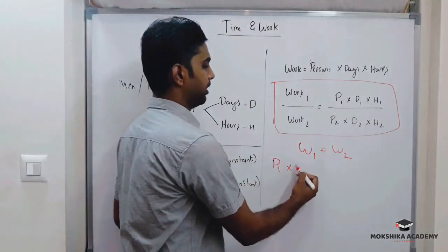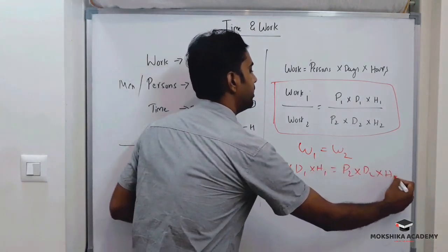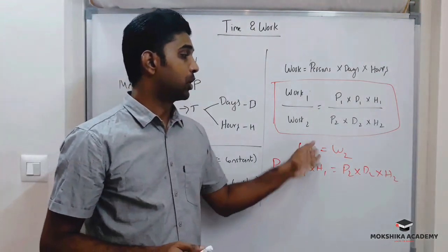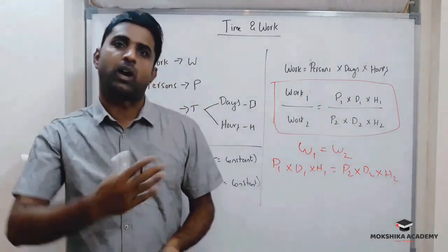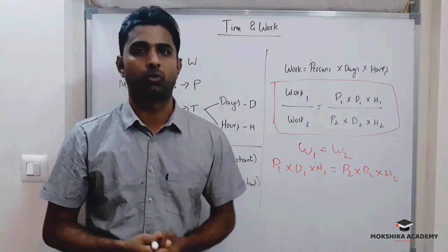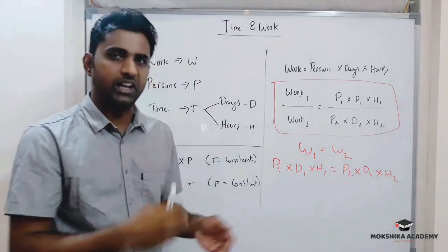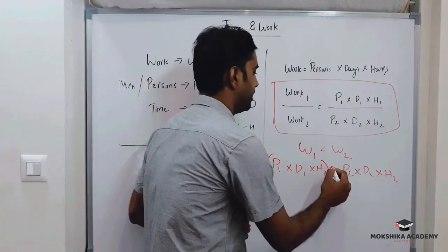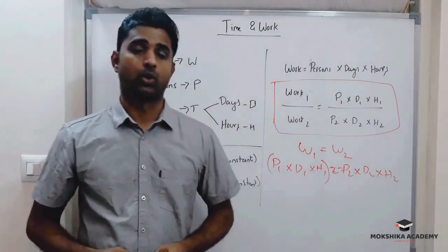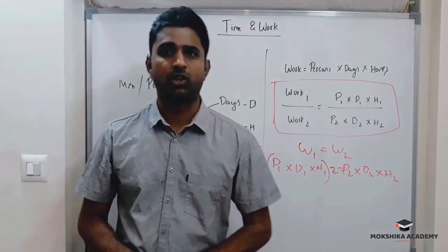Work one is nothing but P1 into D1 into H1, and work two is P2 into D2 into H2. Sometimes work one is twice the work two, so work one equals two times work two. We can use these equations to solve problems. Let us solve some problems.